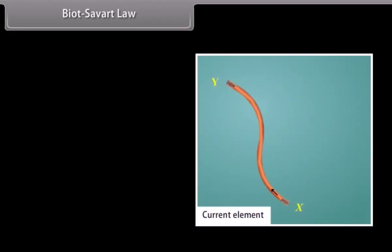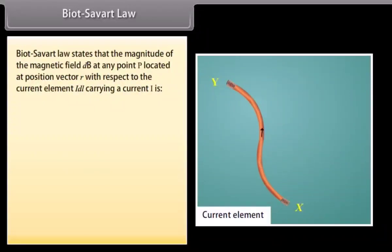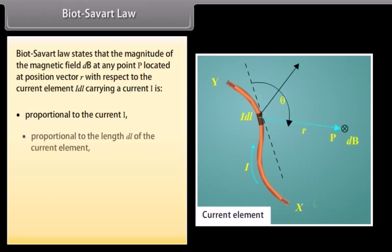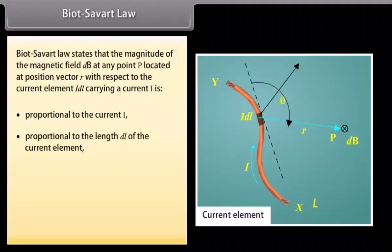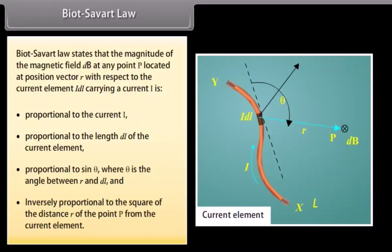Biot-Savart law: It is a mathematical description of the magnetic field at a point that arises from a current flowing through a current element. It states that the magnitude of the magnetic field dB at any point P located at position vector r with respect to the current element idl is: proportional to the current i, proportional to the length dl, proportional to sinθ where θ is the angle between r and dl, and inversely proportional to the square of the distance r.